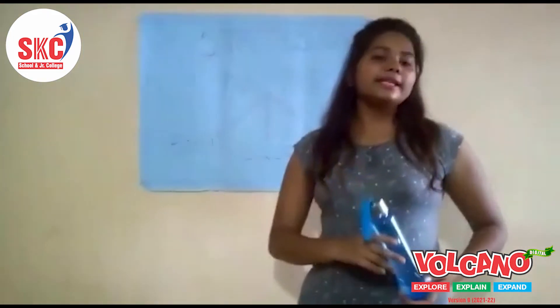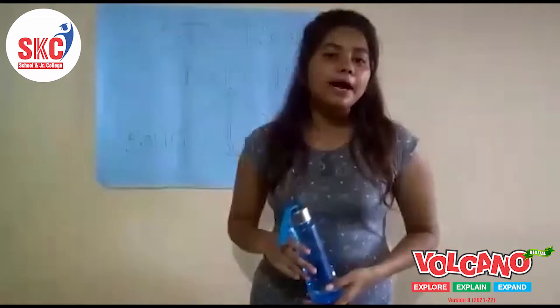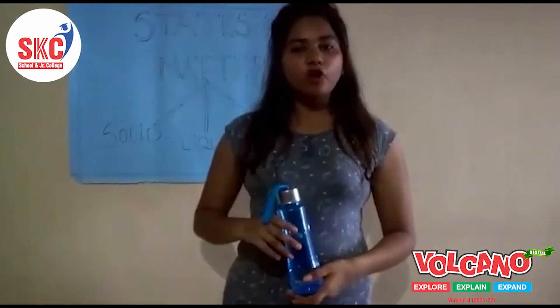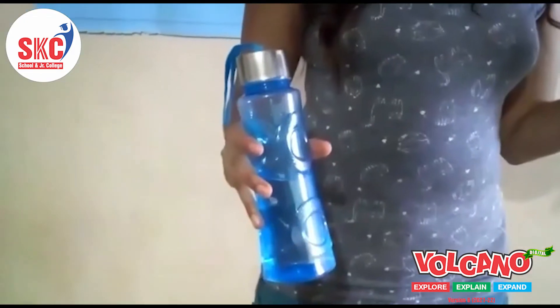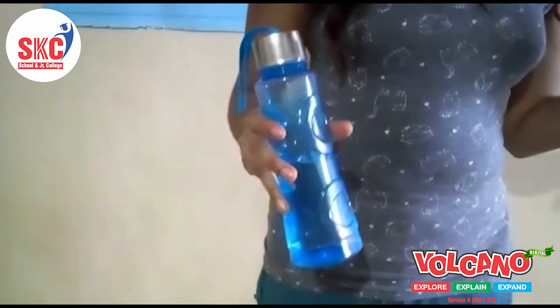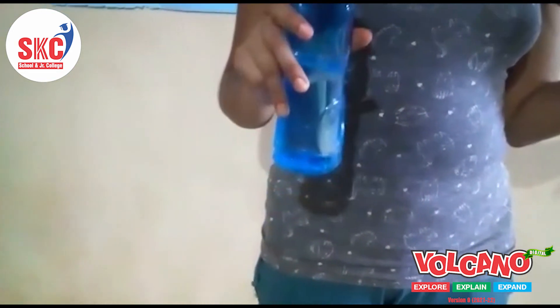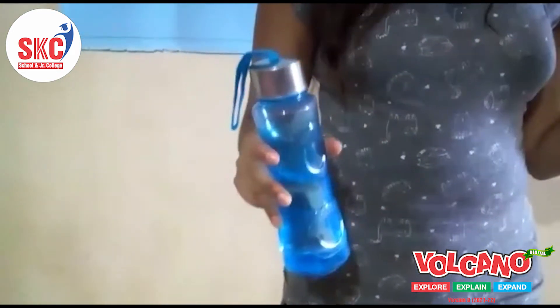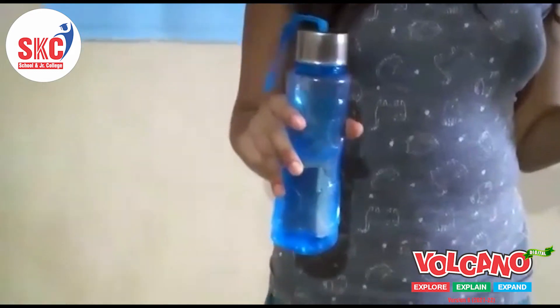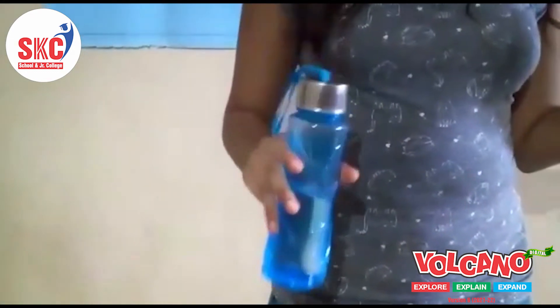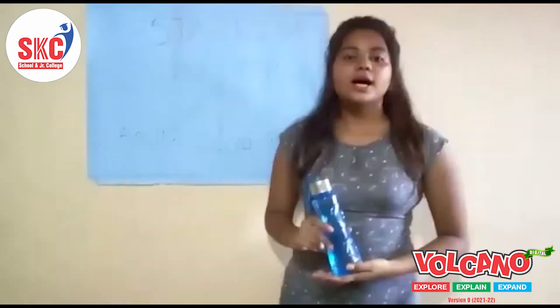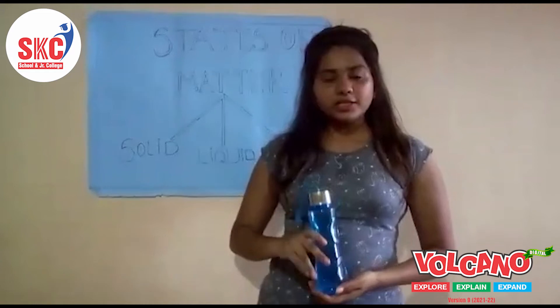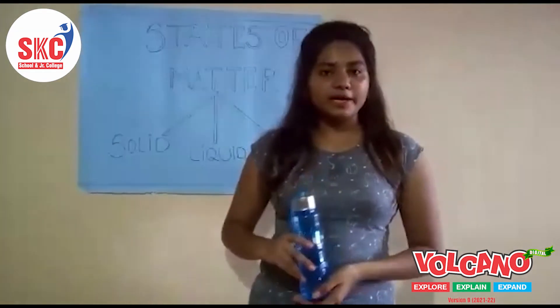Now, let us look at the particles of water filled in a bottle. The particles can move and change their places and slide past one another. They are further apart from each other than in those of a book. This arrangement of particles is known as the liquid state.